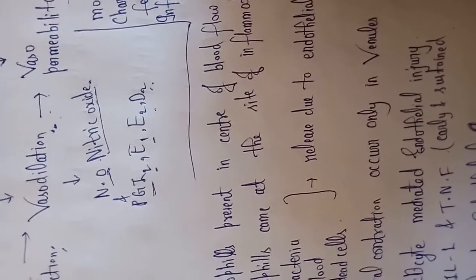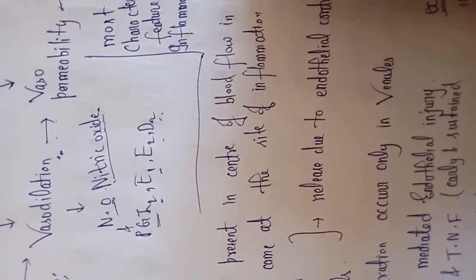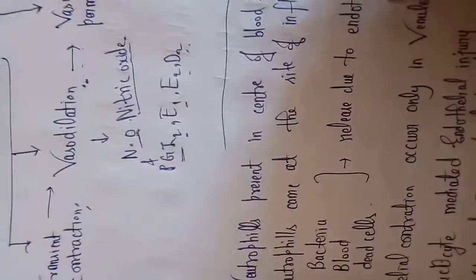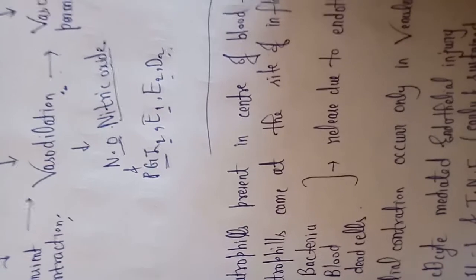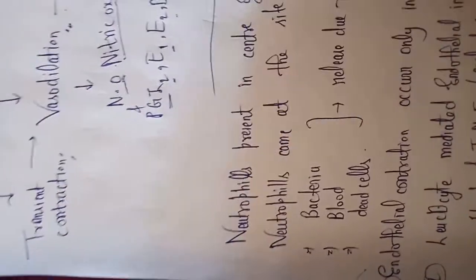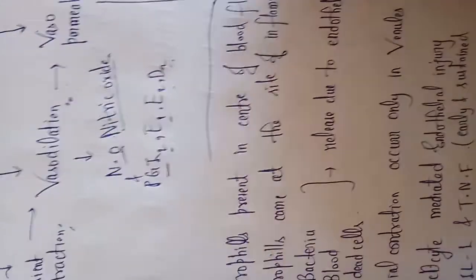Neutrophils are normally present in the center of blood flow within vessels — veins, arteries, capillaries, venules, and arterioles. RBCs are present at the periphery. For migration to the site of inflammation, neutrophils travel via chemotaxis to where inflammation is occurring.